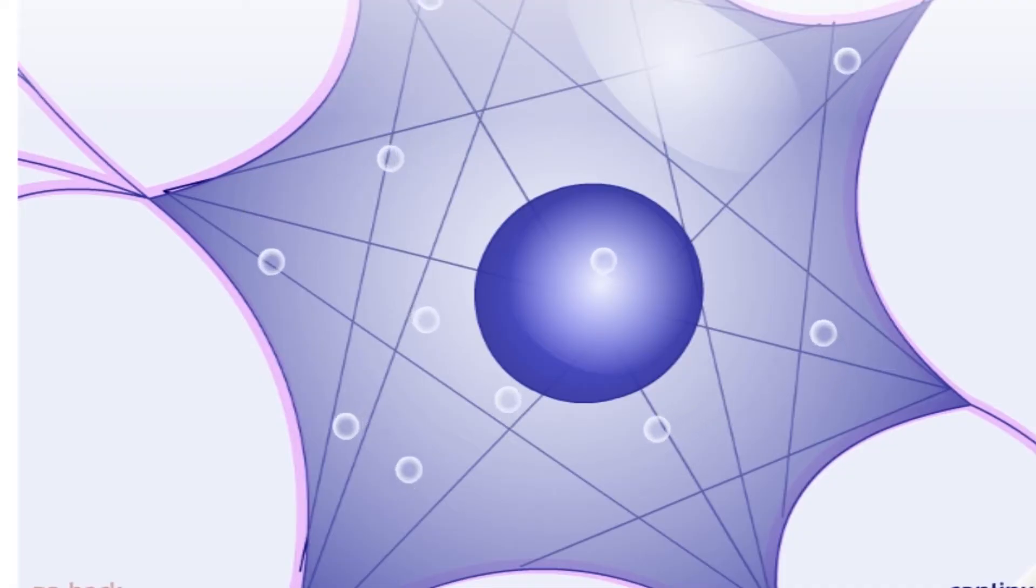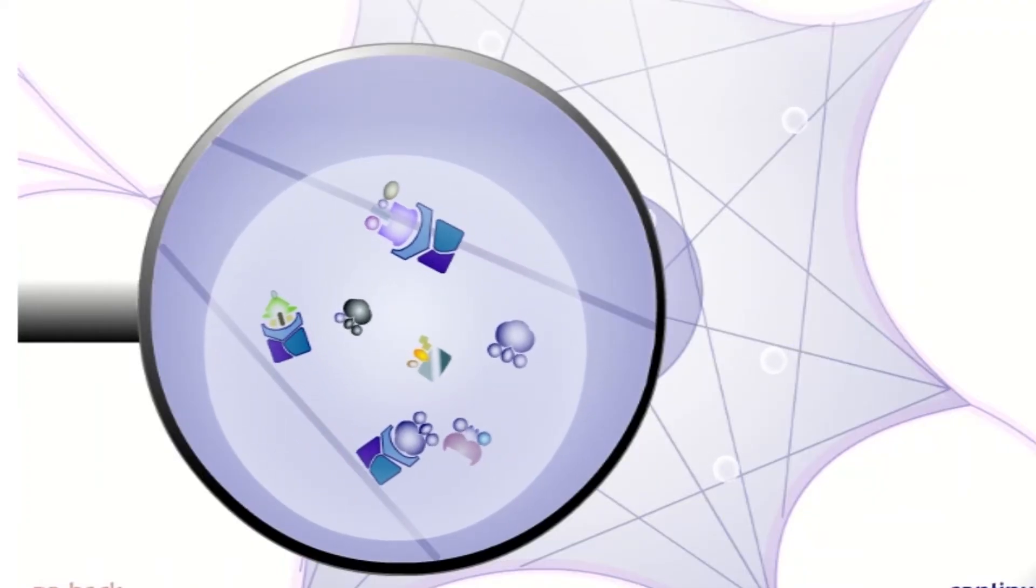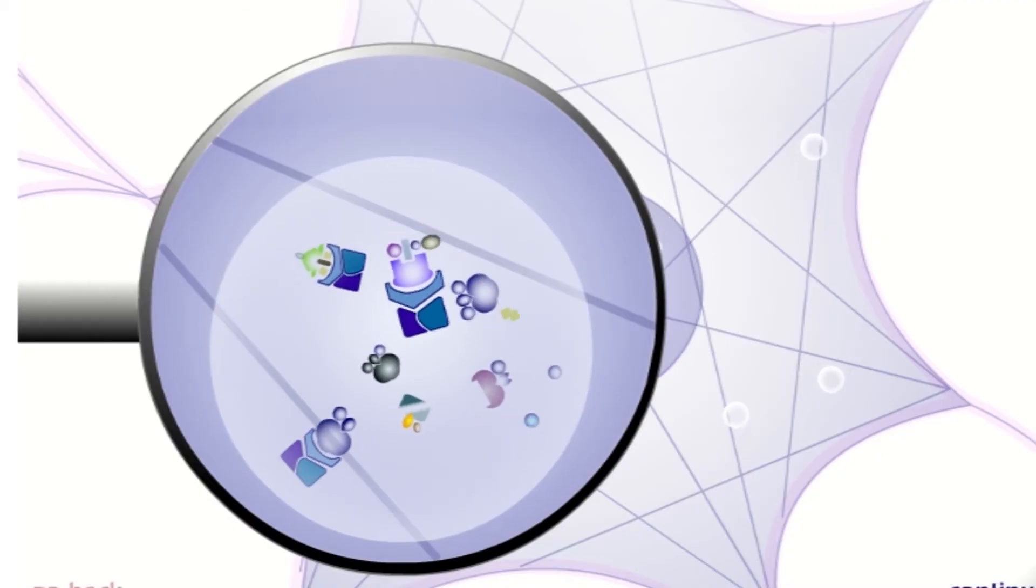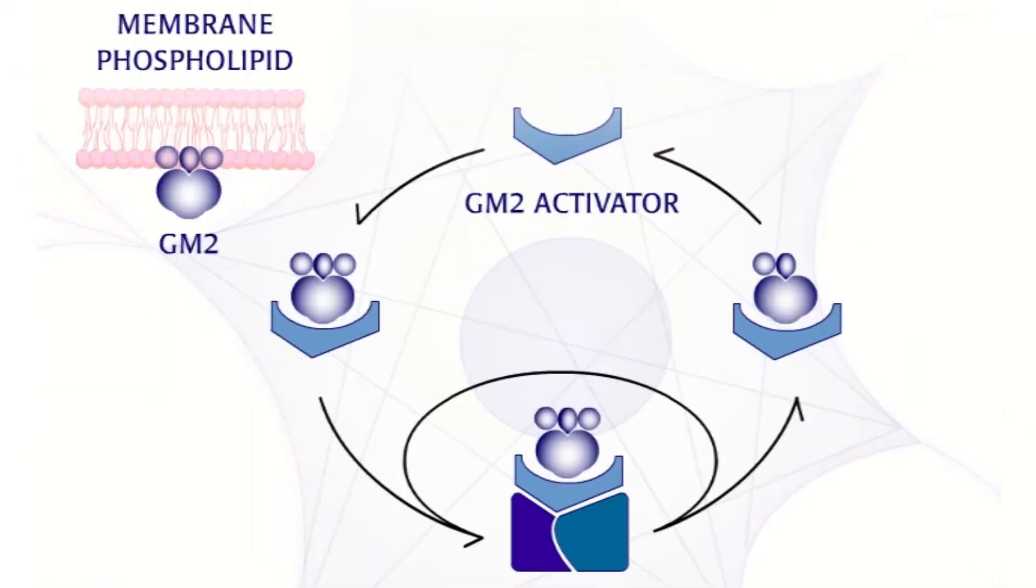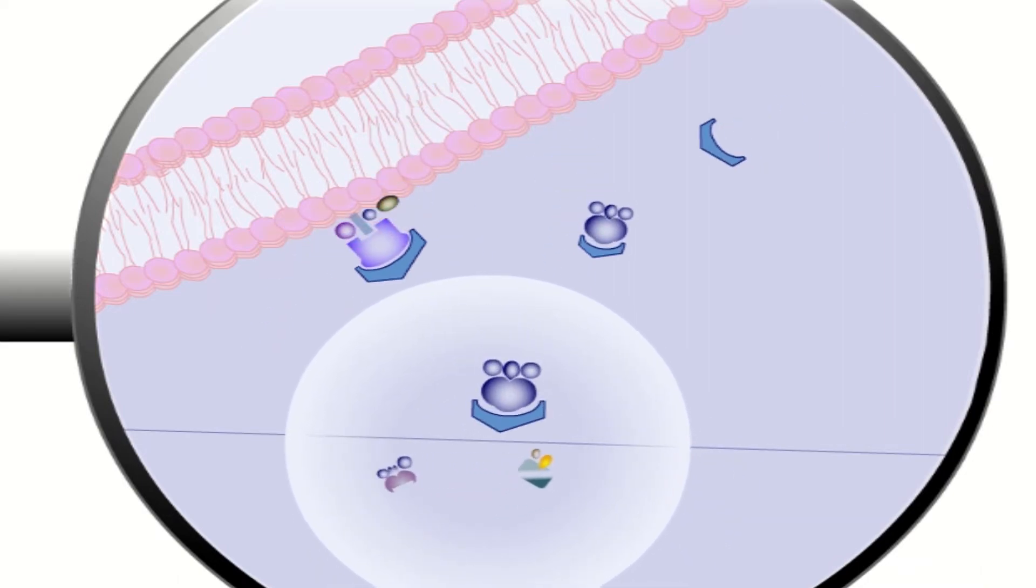Hex A breaks down a large molecule called ganglioside, or GM2, needed for making nerve cell membranes. The activator molecule brings the GM2 to the lysosomes, where it binds to alpha and beta subunits. The binding turns on the hex A. Then GM2 molecule is processed into smaller component pieces to be used again.